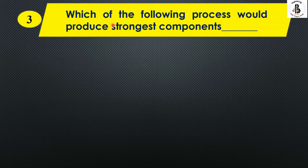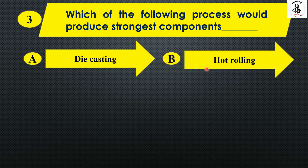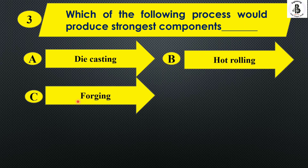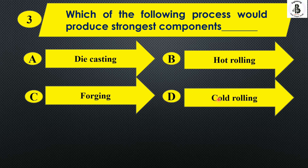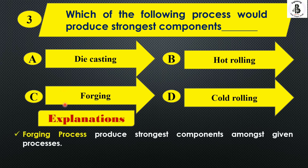Next: which of the following processes would produce the strongest components? Option A die casting, option B hot rolling, option C forging, and option D cold rolling. Basically, if you want the strongest components, the forging process is preferred among the various manufacturing processes. So the right answer is option C, forging.